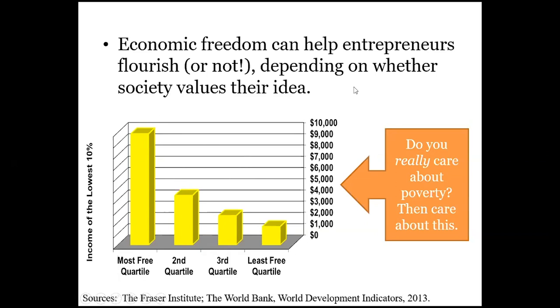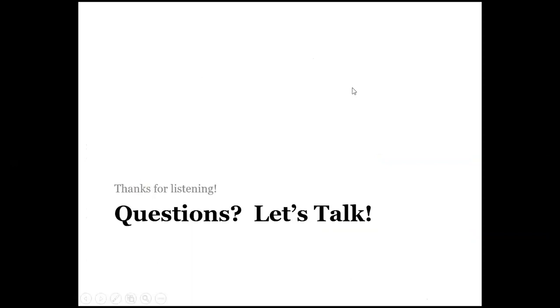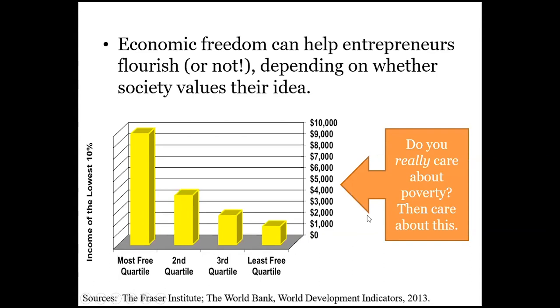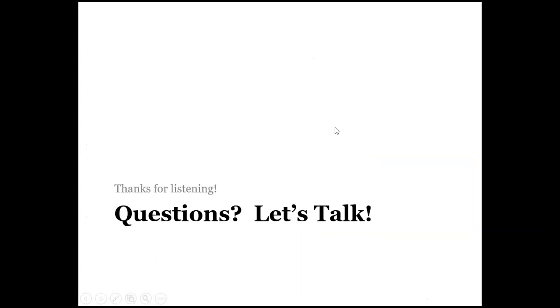The Institute for Justice has lots of evidence that occupational licensing disproportionately affects poor people, women, and other marginalized groups. If you care about poverty and inequality, let's get the low-hanging fruit out of the way. Economic freedom data shows that the countries with the best institutional quality — the most Adam Smith-like institutions — are the places where the poorest people do the best. If you really want to end poverty, care about this.